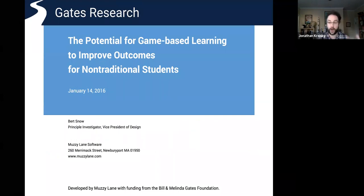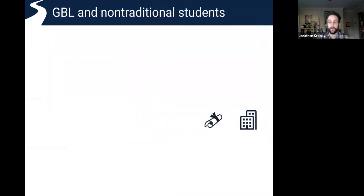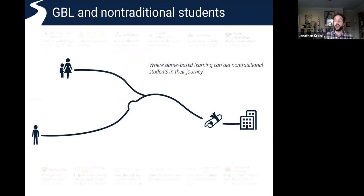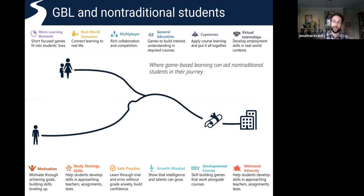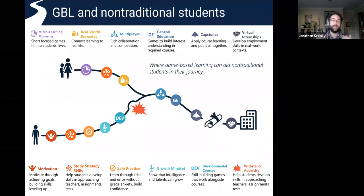Our product, Muzzy Lane Author, came out of a research grant from the Bill and Melinda Gates Foundation, looking into the opportunity to improve outcomes for non-traditional students with game-based learning. We examined the educational pathway of a number of different kinds of students — traditional and non-traditional — including students who might be working full-time, supporting a family, or who might be differently abled in different ways.